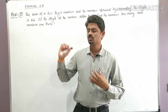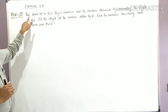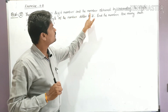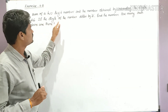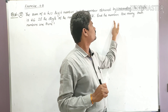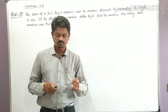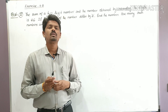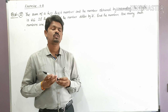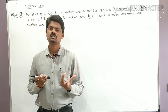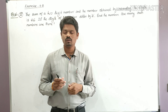See here, this is Question Number 2 from Exercise 4.2. The sum of a two-digit number and the number obtained by reversing its digits is 66. If the digits of the number differ by 2, find the number. How many such numbers are there?